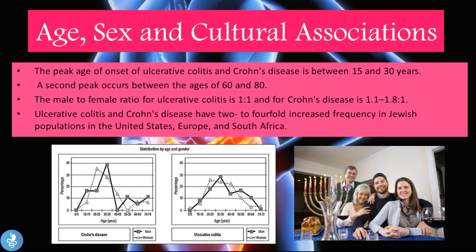Ulcerative colitis and Crohn's disease also have a 2 to 4-fold increased frequency in Jewish populations in the United States, Europe, and South Africa. The graph below shows those peaks between ages 15 and 30, and again between ages 60 to 80 — for both Crohn's and ulcerative colitis.